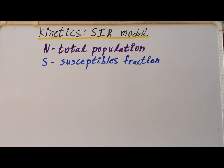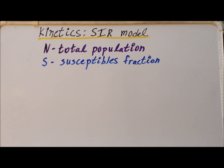First, we are going to go through the SIR model and demonstrate some of the important variables and nomenclature of this particular model. Then, we are going to reintroduce quickly the mechanisms for the unimolecular reaction in the gas phase. And finally, we want to show how we can rewrite each of those in the terminology of the other one.